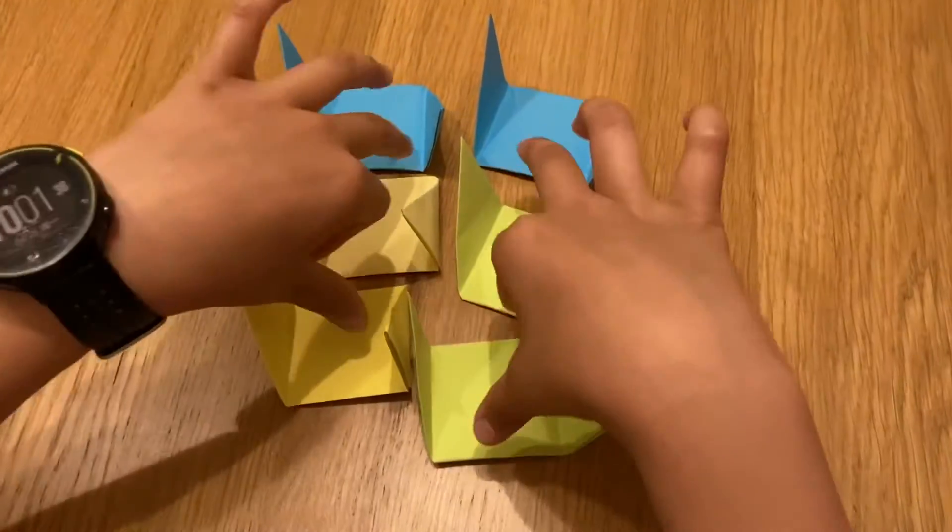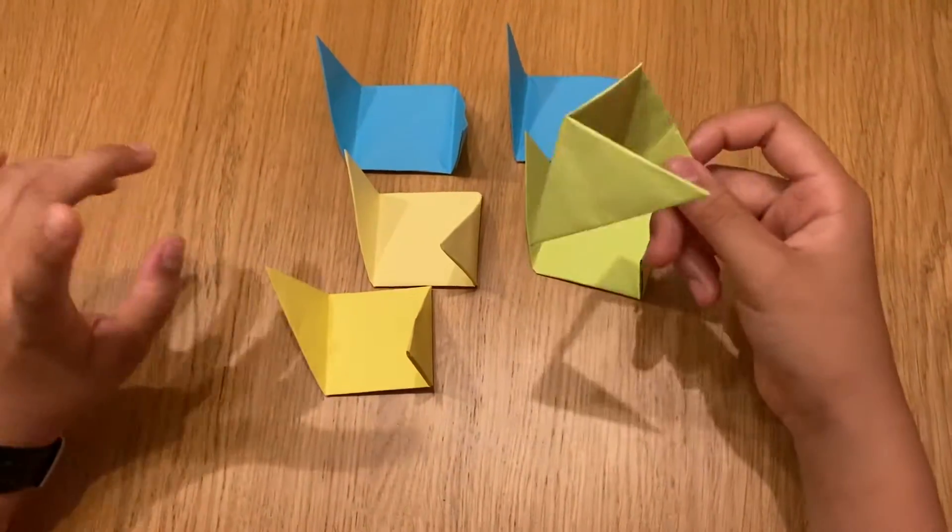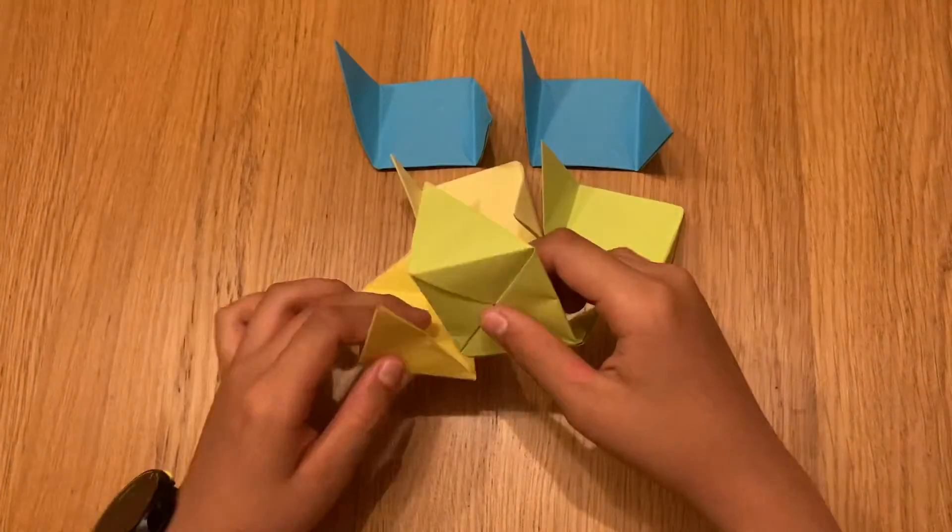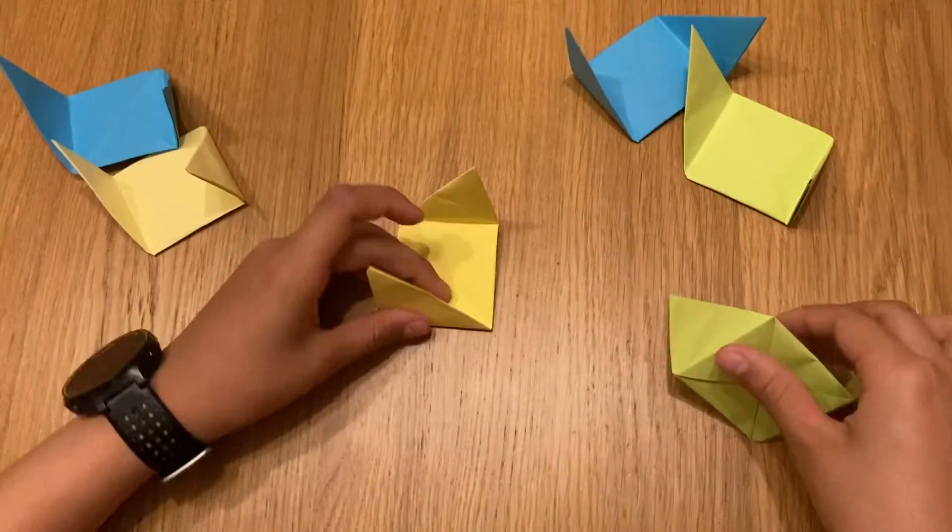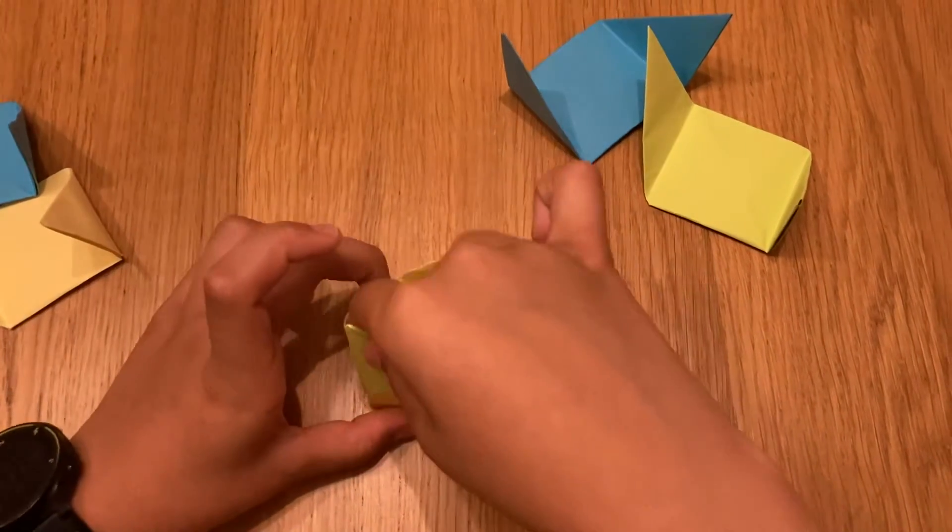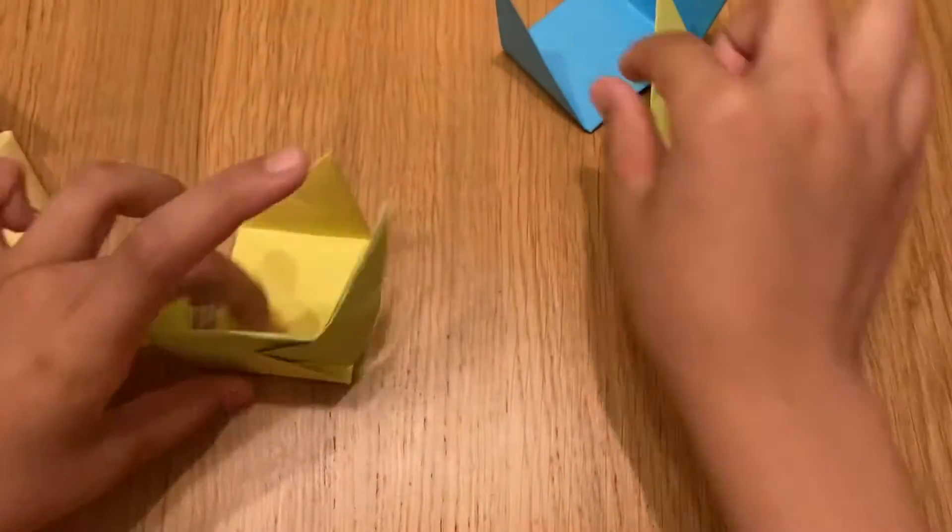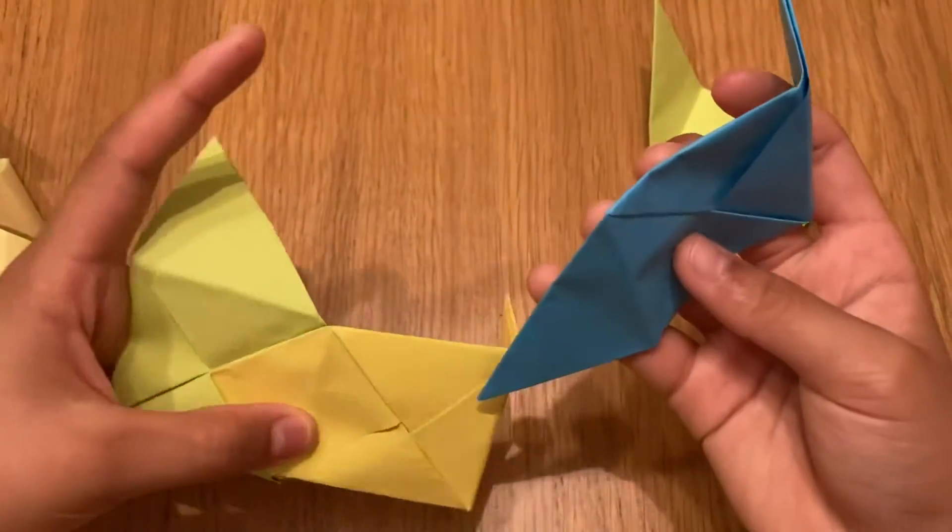Alright guys, we have all of our six pieces like this. I did it in different colors so you can see better where to slide it in. You're basically supposed to take one, take another one, see this, slide it in there. Done, one piece. Take another one, and then see this.